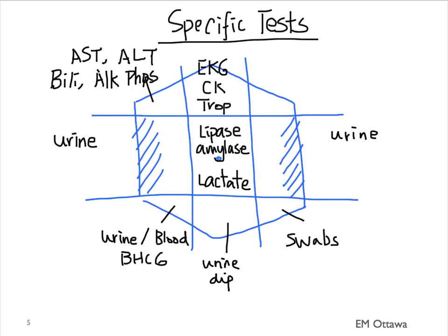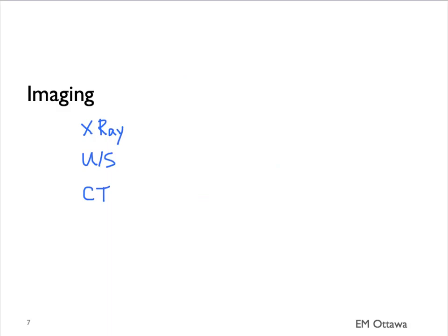Those are the most commonly ordered lab tests for patients with abdominal pain. Next, we'll move on to imaging. We'll divide this into x-ray, ultrasound, and CT, and discuss what conditions can be shown by each modality.